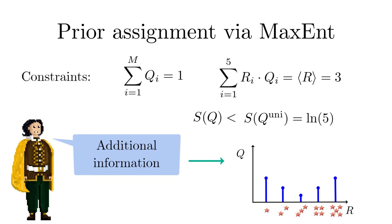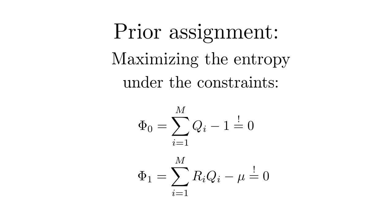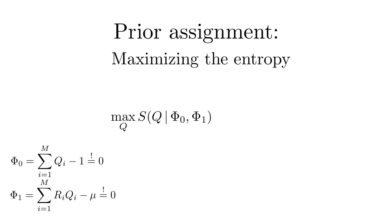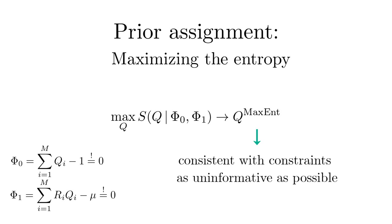By now, you should be able to guess how to proceed if additional so-called testable information like the mean starfish rating is given. I'm sure you got it right. The entropy has to be maximized, fulfilling all the constraints including normalization. For the sake of clarity, we will only use one constraint in addition to the normalization. Maximizing the entropy under those constraints leads to the probabilities that are consistent with the constraints but otherwise as uninformative or uncommitted as possible. If you draw conclusions based on the maximum entropy probability distribution, the deviation to the true result is thereby minimized on average.